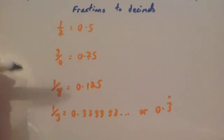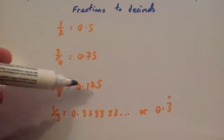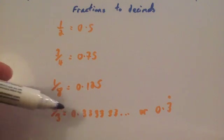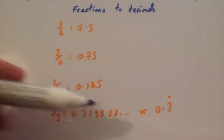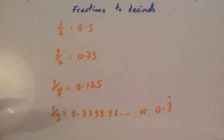But we're going to look at how to convert things, for instance, 1/8 to 0.125, and a third to 0.3333... or 0.3 recurring. So we're going to look at how to do that in today's lesson.